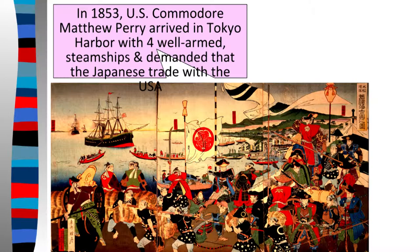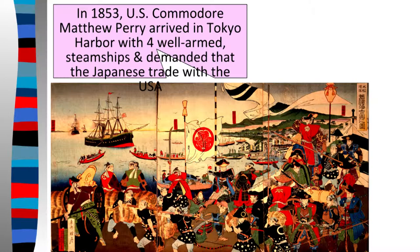These officials quickly realized they didn't have a steamship — just their sail ships — so they were definitely overmatched by the US naval ships. When Matthew Perry said he'd come back the next year to let them think about it, they decided maybe they should sign. They were not going to be able to win if it came to war. So the Japanese officials signed the Treaty of Kanagawa, which opened some ports to the Americans. They'd been their own thing for 200 years, but they had to reopen their ports, otherwise the Americans would go to war with them and probably win.